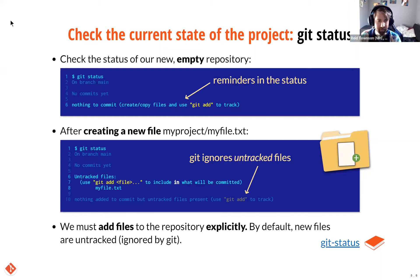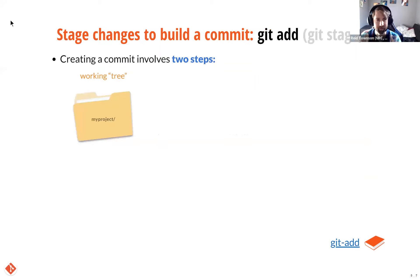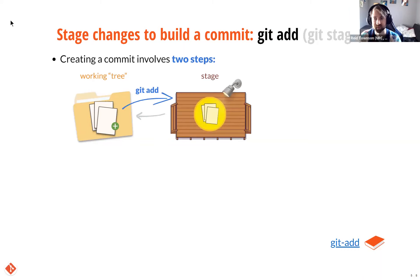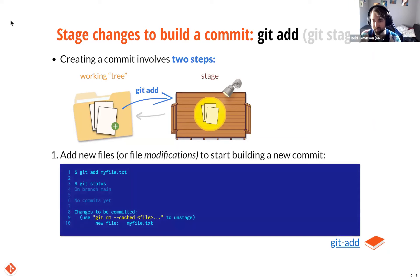Git status gives us some advice about what to do next: create some files and use git add to start tracking. If we follow that advice, create a new file, and type git status again — now it tells us there's an untracked file, and suggests we might want to use git add to include it in what's going to be committed. You can have as many untracked files as you like. Git isn't going to touch or track them. This makes sense — if you're writing code and it generates executables in the same directory, you don't need to keep track of executables.